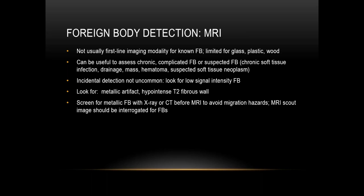MRI is not usually the first-line imaging modality for foreign bodies and can be limited in the detection of glass, plastic, and wood. However, it can be useful for problem solving to assess chronic, complicated foreign bodies or a suspected foreign body. You may receive a history such as a chronic soft tissue infection with drainage, mass, hematoma, or even a suspected soft tissue neoplasm — it is important to maintain a high level of suspicion for foreign body in those cases, as incidental detection is not uncommon.